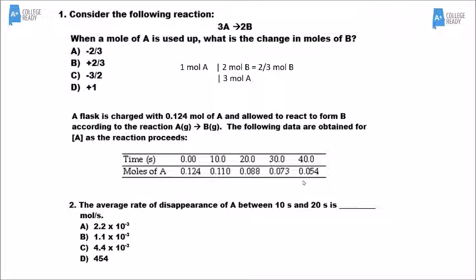For number two, we need to look at the change in concentration of A over the time period from 10 seconds to 20 seconds. We take the bigger number minus the smaller number and get 0.0022 moles of A per second. This really should be negative; however, the question asks about disappearance, so don't worry about the sign — just give the number.